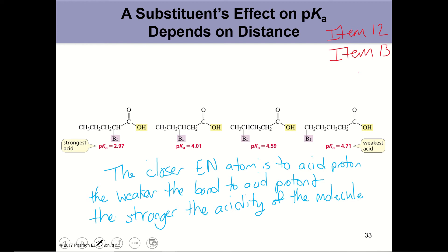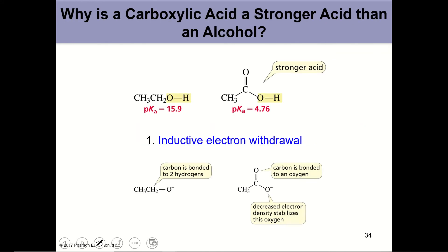You should be able to rank acid strength by variation of atoms in electronegativity or by the variation of the distance of the electronegative atom to the acid proton. Why is a carboxylic acid a stronger acid than an alcohol? There is one more electronegative atom in a carboxylic acid than in an alcohol, and the proximity of that electronegative atom withdrawing electron density makes the bond to hydrogen weaker.